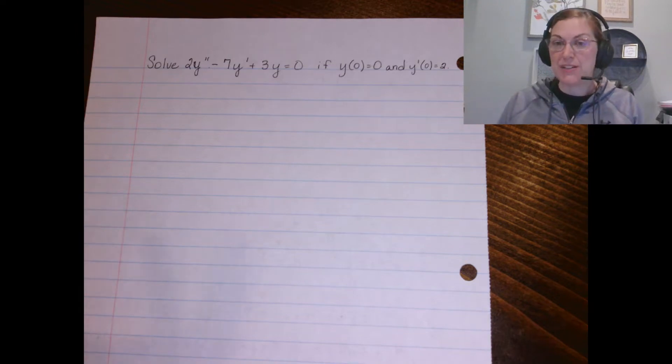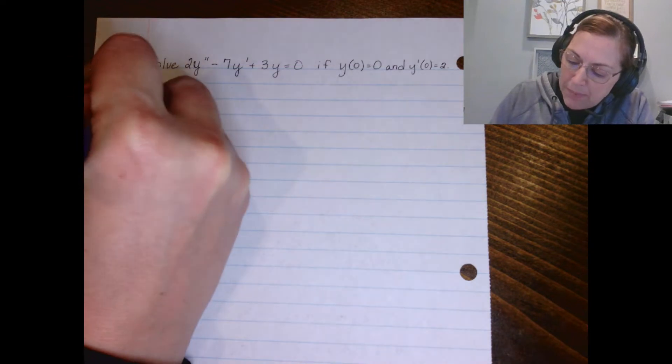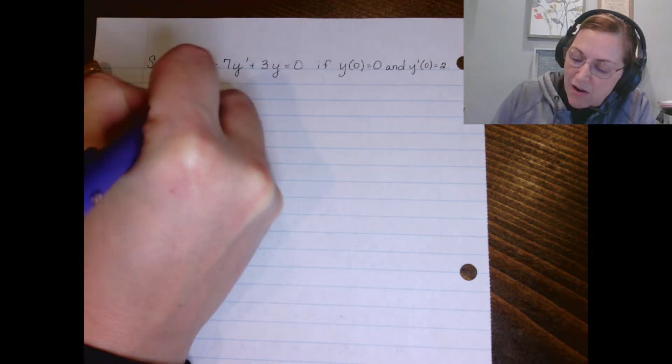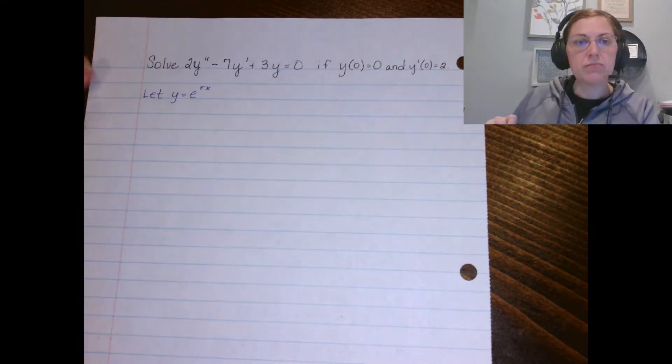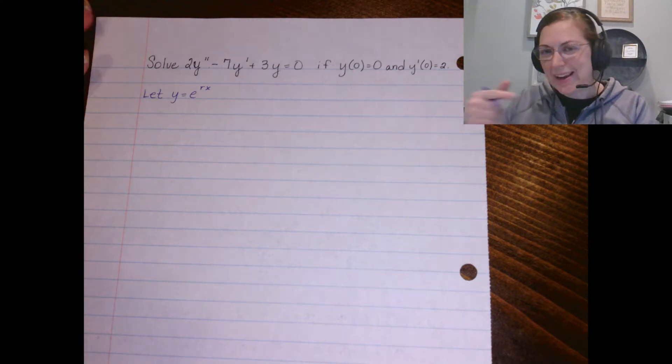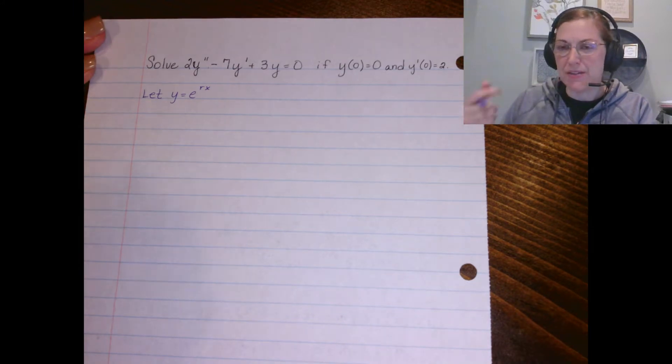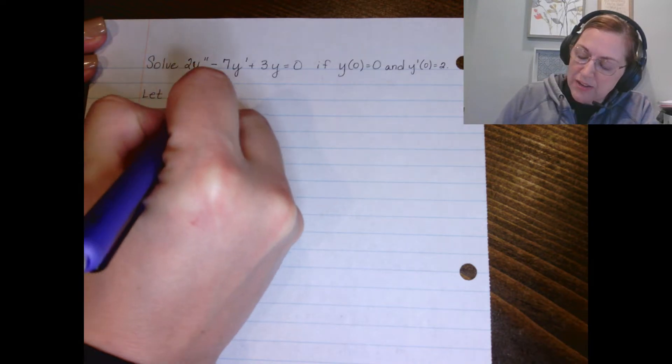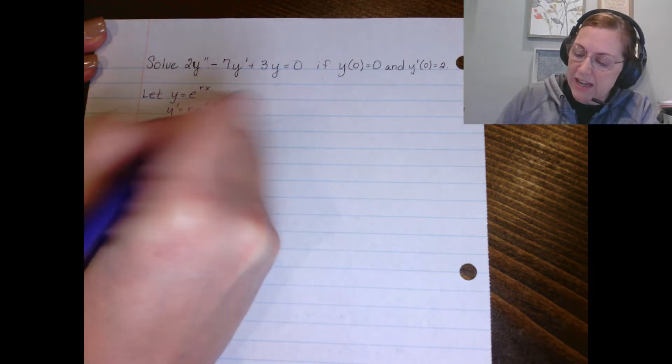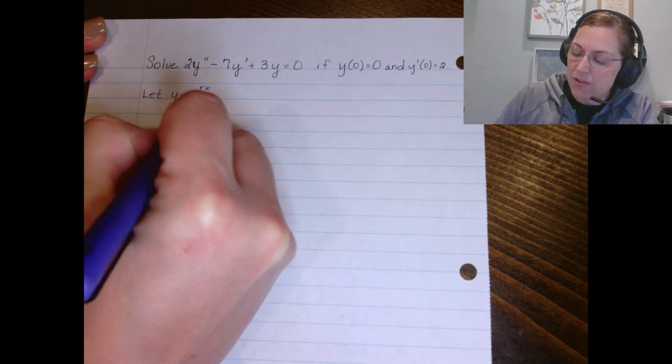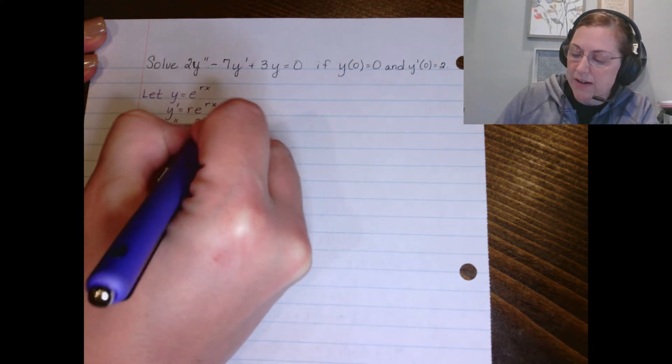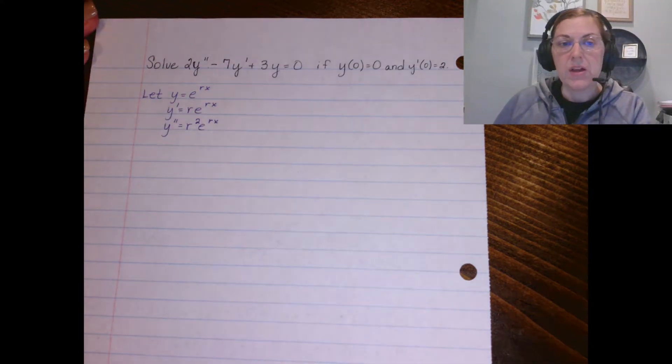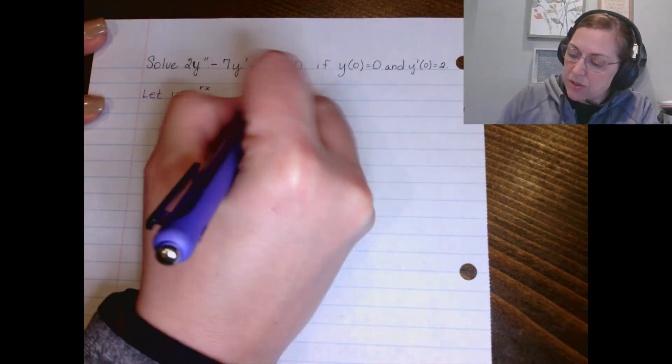Anytime we're dealing with a second-order equation, we want to start with letting y be e to the rx. We're playing off the properties and the derivative of e, so we'll use that the first derivative would be r e to the rx and the second derivative would be r² e to the rx. Now let's make those substitutions.